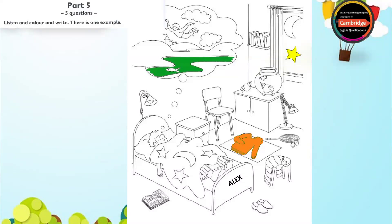Four. Can I colour the lamp now? Yes. Colour the one that's above the boy's head. Colour it purple. OK. I like that lamp. I've got one like that. Have you? Yes.